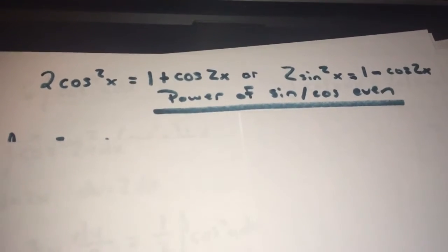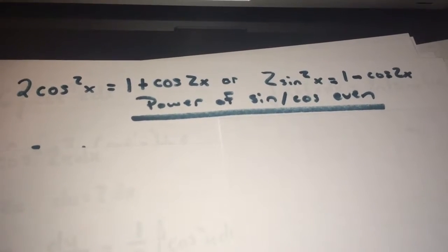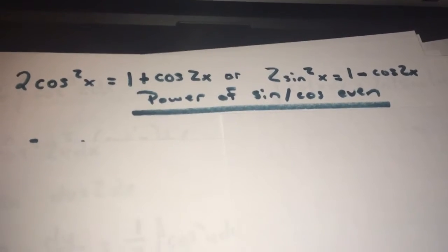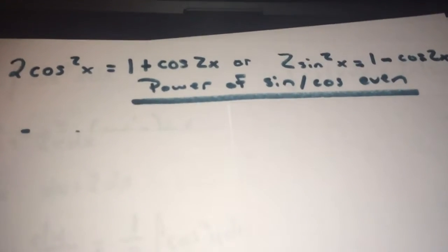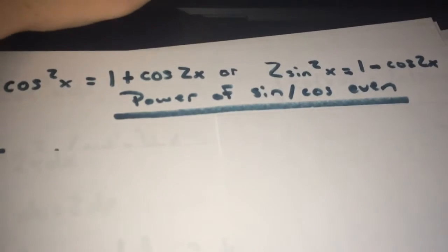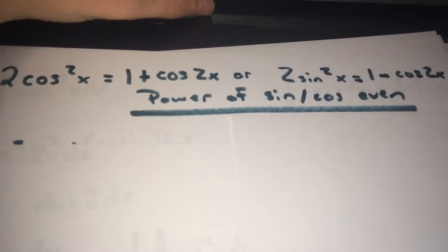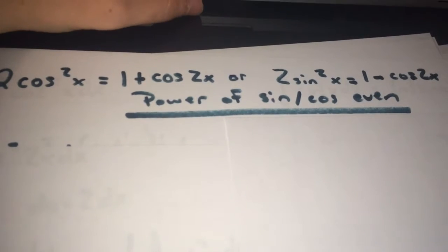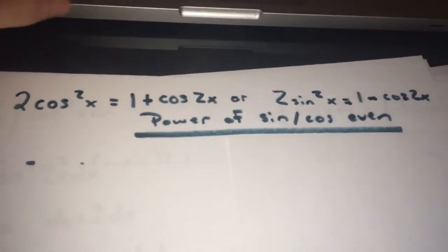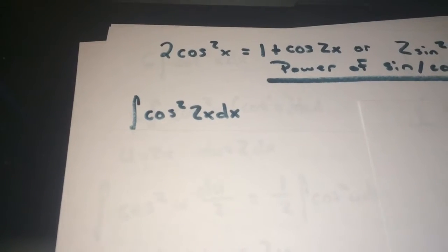For the next one, I'm going to use the identity 2 cosine squared x equals 1 plus cosine 2x, or equivalently 2 sine squared x equals 1 minus cosine 2x. This applies when the power of sine or cosine is even. The previous example was odd; this one is now for even powers. The example is the integral of cosine squared 2x dx.